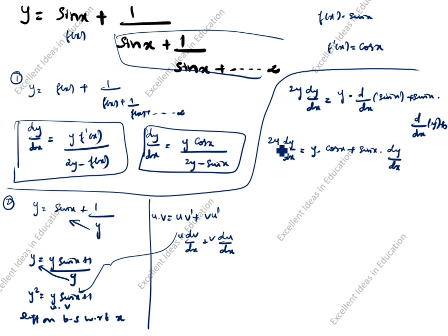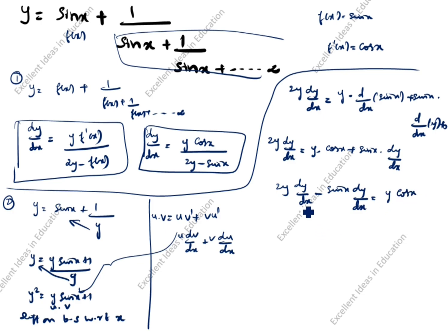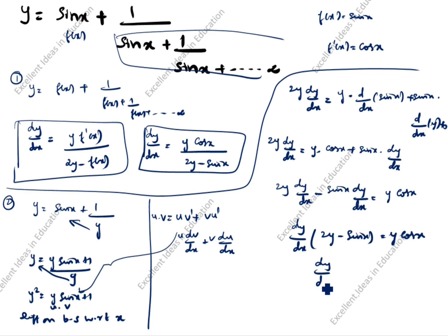dy/dx appears on both sides, so we bring it to one side: 2y·dy/dx − sin x·dy/dx = y·cos x. Taking dy/dx as common: dy/dx·(2y − sin x) = y·cos x, so dy/dx = y·cos x / (2y − sin x). This is the answer.